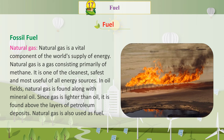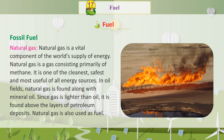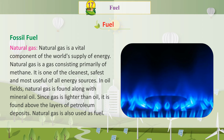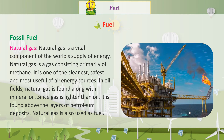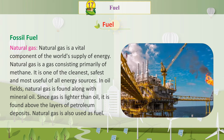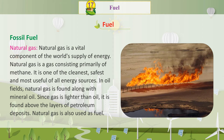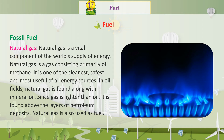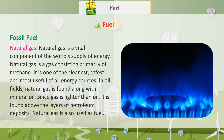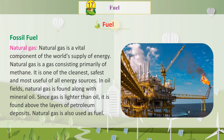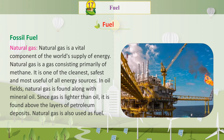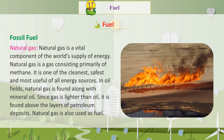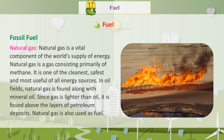Natural gas is a vital component of the world's supply of energy. Natural gas is a gas consisting primarily of methane. It is one of the cleanest, safest, and most useful of all energy sources. In oil fields, natural gas is found along with mineral oil. Since gas is lighter than oil, it is found above the layers of petroleum deposits. Natural gas is also used as fuel.